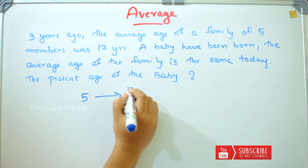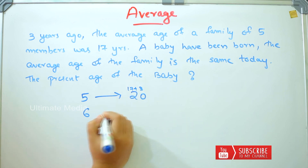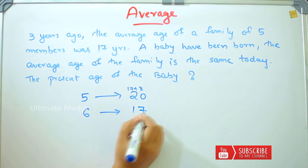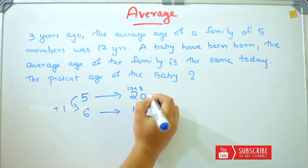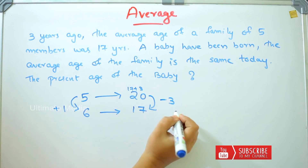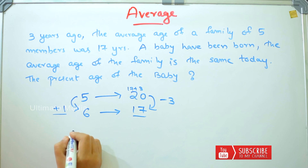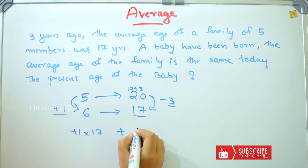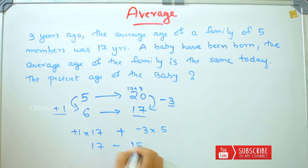17 plus 3 equals 20. If you have this difference it's plus 1, and if you have this difference it's minus 3. So: plus 1 into 17, plus minus 3 into 5. That gives 17 minus 15, which equals 2.